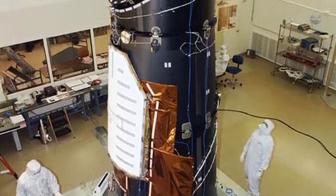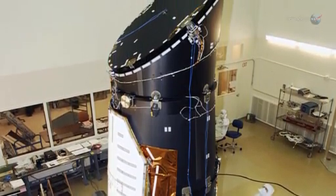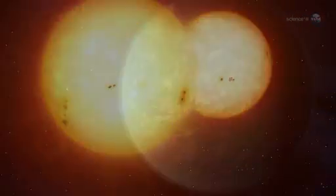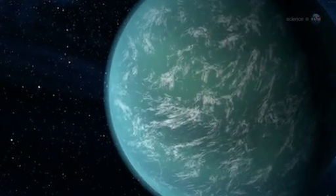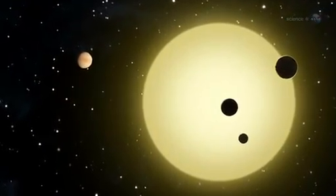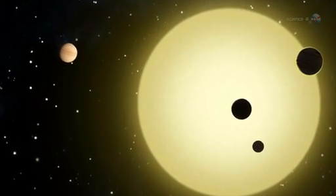NASA's Kepler spacecraft is discovering a veritable avalanche of alien worlds. Recent finds include planets with double suns, massive super-Earths and hot Jupiters, and a miniature solar system. The variety of planets circling distant suns is as wonderful as it is surprising.